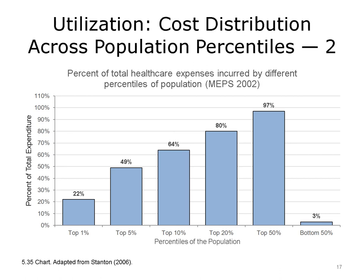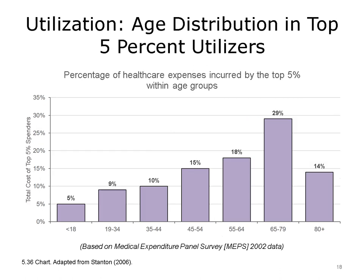This bar chart shows the percent of total healthcare expenses incurred by different percentiles of the population, based on the 2002 MEPS data. As shown, almost 50% of the population falls within the bottom 3% of spenders, and almost 20% of the population creates 80% of the spending. The top 1% of spenders created more than 20% of the total cost. This bar chart also shows the distribution of age within the top 5% of healthcare utilizers, where the 65 to 79 age range includes almost a third of the top 5% of utilizers.